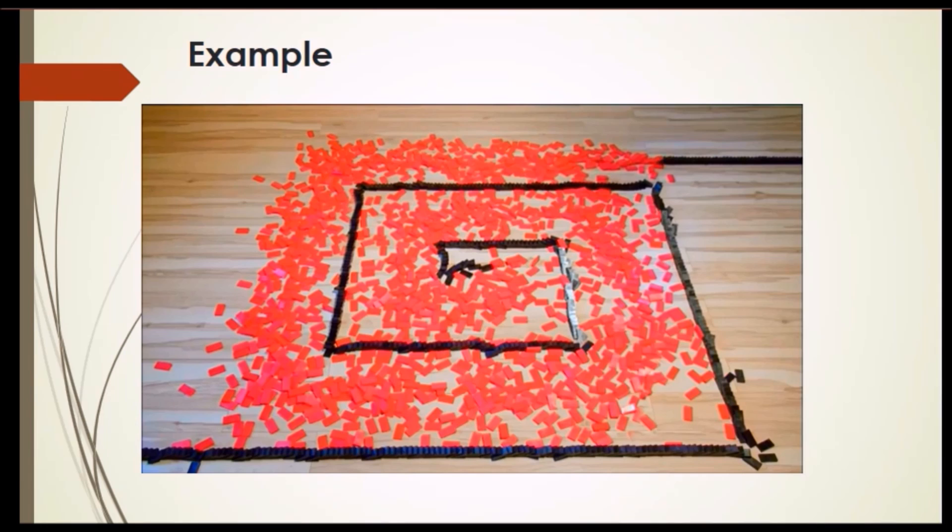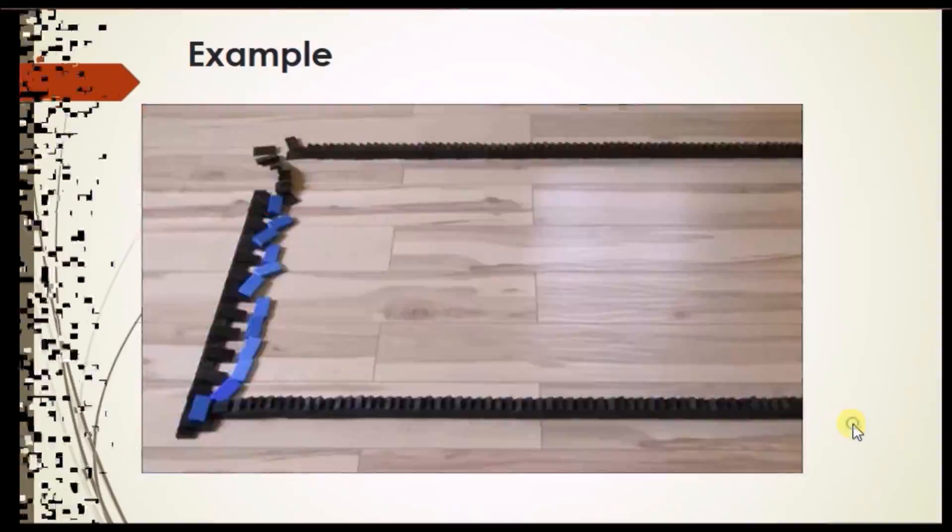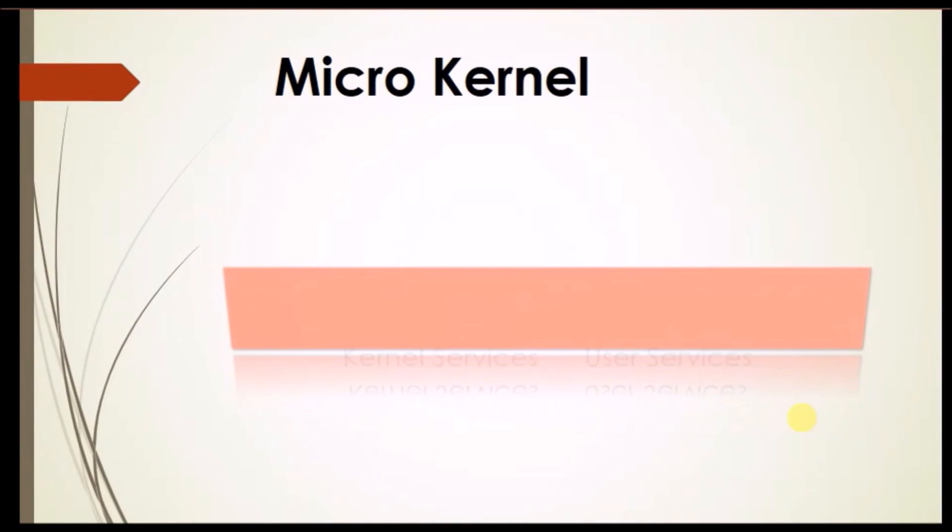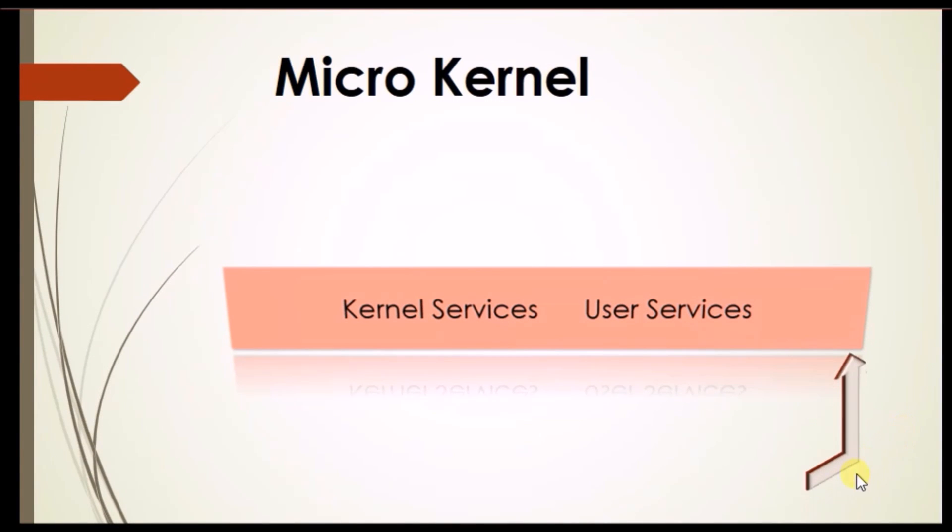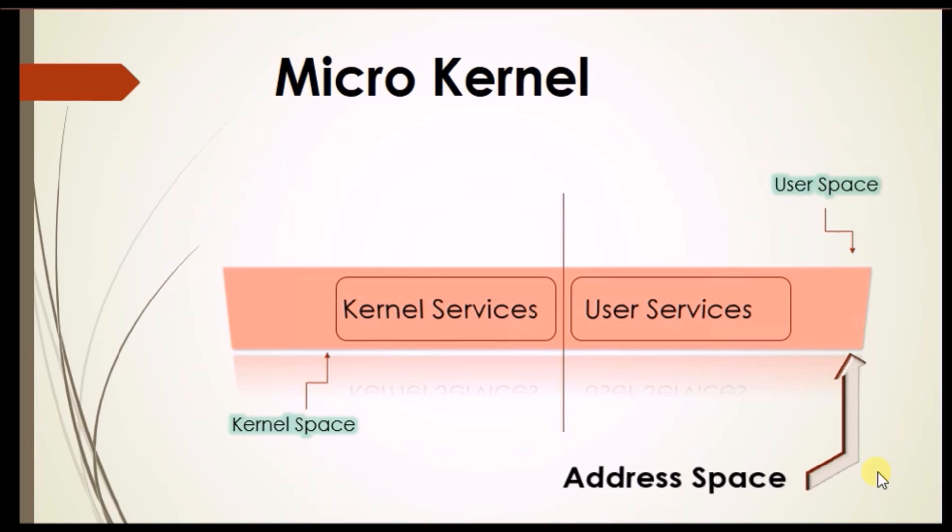That's all about monolithic kernel. Now Akanksha will talk about microkernel. Hi guys, I'm back. As we can see that in monolithic kernel, the kernel services and user services have common address space. But in microkernel, the kernel services and user services have separate address space. The space containing kernel services is known as kernel space and the space containing user services is known as user space.